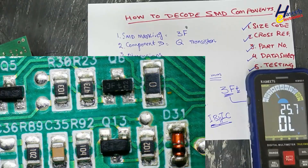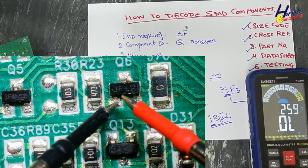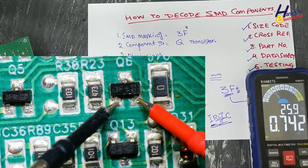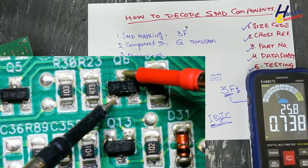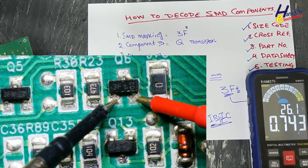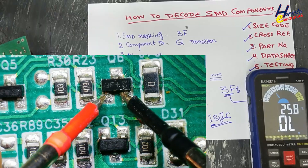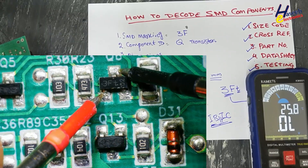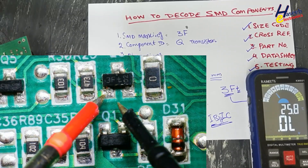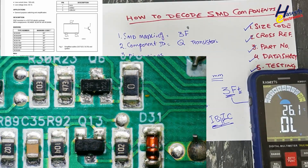We checked the cross-reference, part number, and datasheet. Now we test the component. Set the multimeter to diode mode. Since it is PNP, the base is the negative common. We measure 0.743 V base to collector and 0.738 V base to emitter. Reversing the leads gives open circuit. If there is a high reading in reverse, it is due to external components. This transistor is good. If you enjoyed this decoding, give a thumbs up, subscribe, and write any questions in the comments. Thanks for watching.